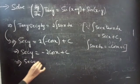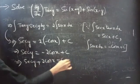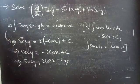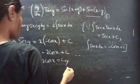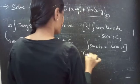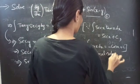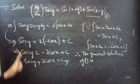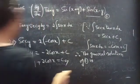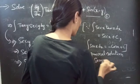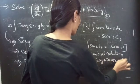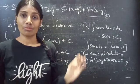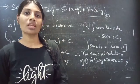Therefore, sec(y) = −2·cos(x) + C. This is the required general solution to the given differential equation. We have seen a problem solved using the variable separable method in this video. Hope you understood. See you in the next video. Bye-bye.